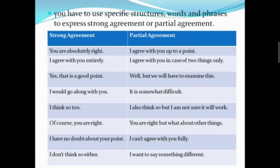In group discussion, you have to use specific structures, words, and phrases to express your strong agreement or partial agreement. When you want to express strong agreement, you can use: 'You are absolutely right.' 'I agree with you entirely.' 'Yes, that is a good point.' 'I would go along with you.' 'I think so too.' 'Of course, you are right.' 'I have no doubt about your point.' 'I don't think so either.'